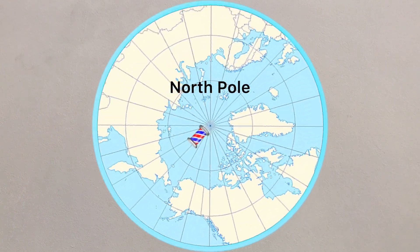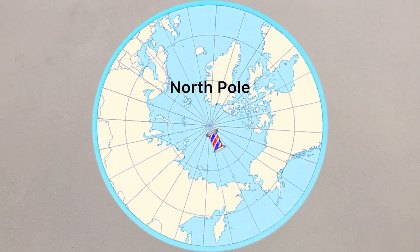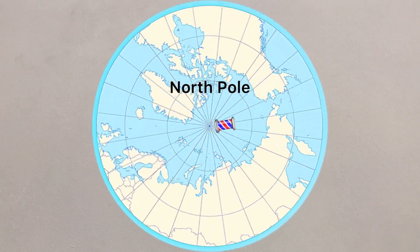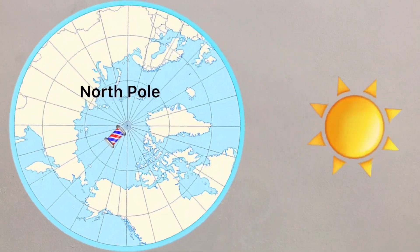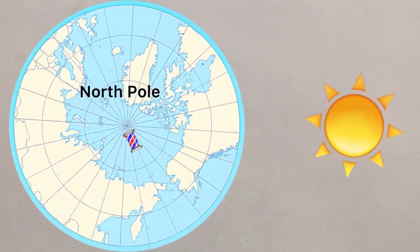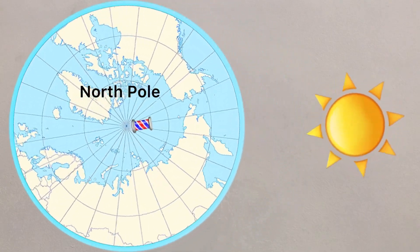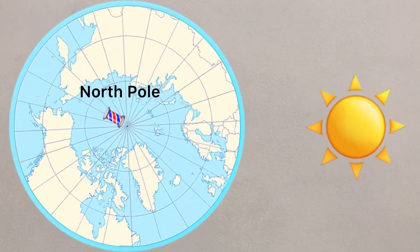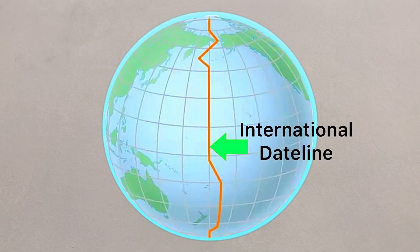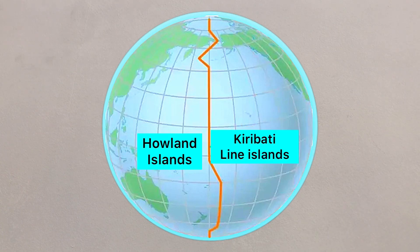The Earth rotates from west to east, anticlockwise when viewed from the North Pole, meaning that countries in the eastern hemisphere will experience the start of the day before those in the west. Due to the disjointed nature of the international dateline, there are some island nations that have a 26-hour time difference.